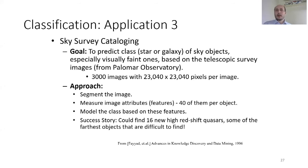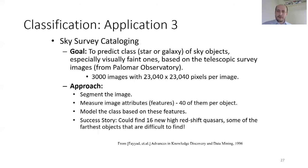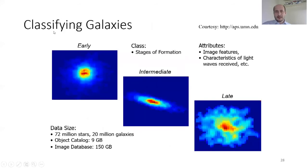The third application is sky survey cataloging. The goal is to predict the class — star or galaxy — of a sky object, especially visually faint ones, based on telescopic survey images. With 3,000 high-resolution images, the approach segments each image, measures 40 image attributes per object, and models the class. A success story was finding 16 new higher-redshift quasars among the farthest objects. We can also classify galaxies in their early, intermediate, or late states.